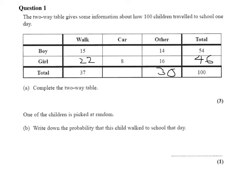Now we have 30 and the missing number here. So 37, this number, and 30 make 100. Well, 30 and 37 make 67, so we need 33 here. And that means 33 subtract 8 will give me the missing number here. 33 subtract 8 is 25.